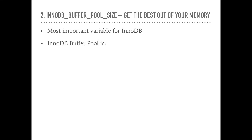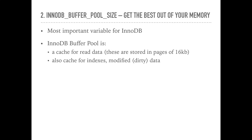InnoDB buffer pool actually serves multiple purposes. It's used for data caching — definitely the big part of it. Indices caching — yes, these share the same buffer pool. Buffering modified data, often called dirty data, which lives here before it's flushed. Storing internal structures — some structures such as adaptive hash index and row locks are also stored in the InnoDB buffer pool.